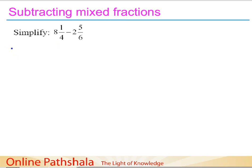First, we write down the numbers as the sum of whole and fractional parts. The first fraction is 8 plus 1/4, and we subtract the second which is 2 plus 5/6. Simplifying the bracket, the minus sign changes both signs, giving us 8 plus 1/4 minus 2 minus 5/6.